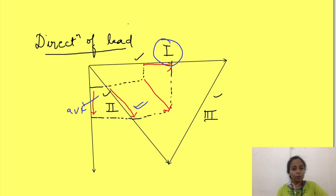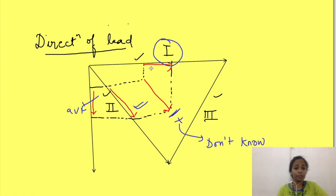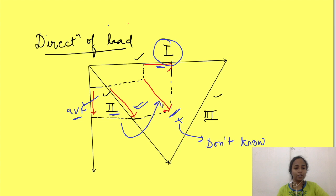Now when we look at an ECG, we do not know how current is flowing in the heart or what is the average direction of depolarization. But what we do is use the voltages in these leads to calculate the mean electrical axis in the heart. So we are kind of inverting the process.